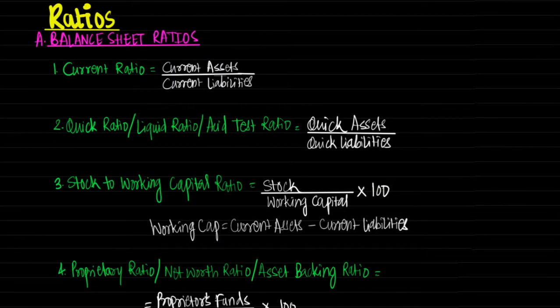First is current ratio, which is current assets upon current liabilities. Current assets include assets which are circulated and liquidated in cash within one accounting period — examples are debtors, bills receivables, short term investments, inventories, loose tools, etc. Current liabilities include any liability which is due to be paid within one accounting period — examples are creditors, bills payable, outstanding expenses, proposed dividend, bank overdraft, etc.